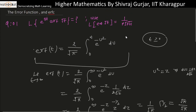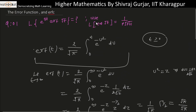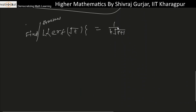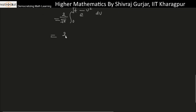Now we may be asked: what is the Laplace transformation of the error function? We are asked to find the Laplace transform of erf(root t). The result is one divided by p times root(p plus one). We start with the integral from zero to root t of two by root pi times e to the power minus u squared, and try the series expansion.